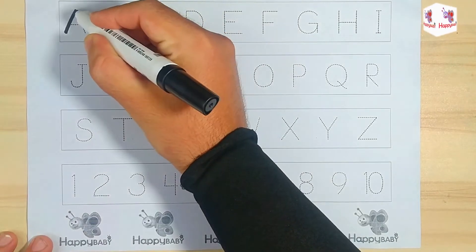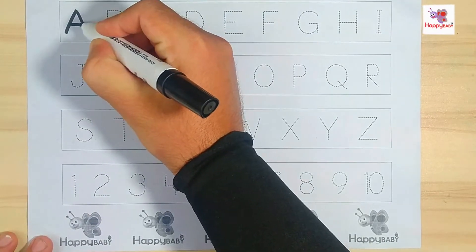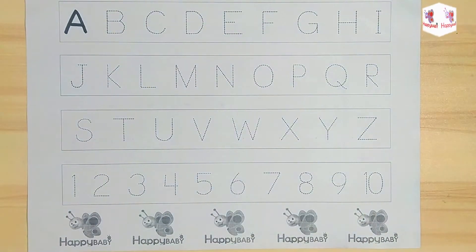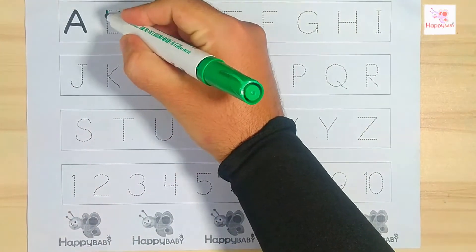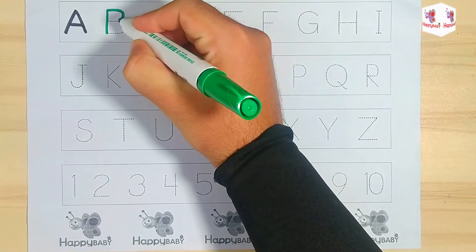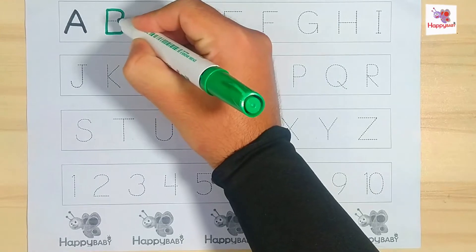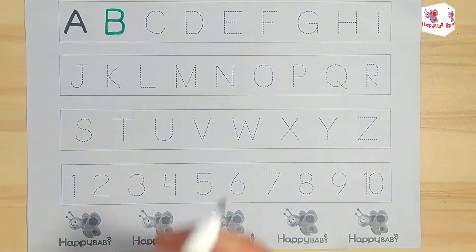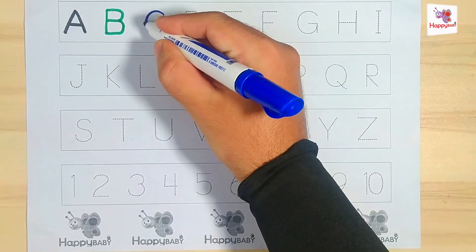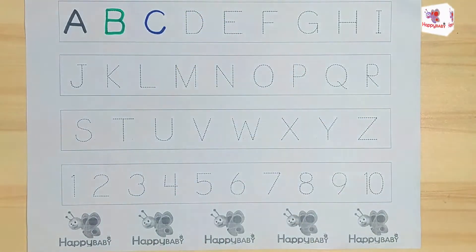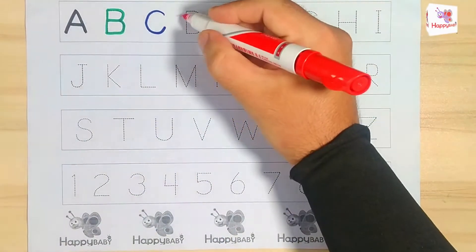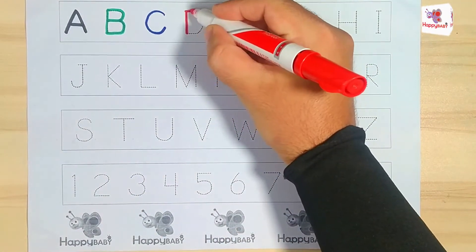A. A for apple. B. B for ball. C. C for cat. D. D for doll.